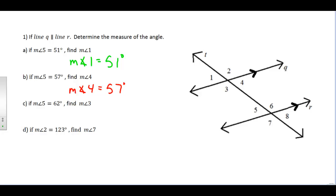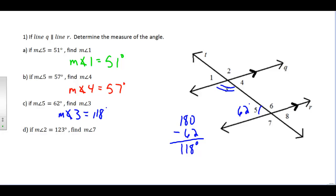For part C, if angle 5 is 62 degrees, find angle 3. Angles 3 and 5 are consecutive interior angles, so they must be supplementary. Taking 180 minus 62 gives 118 degrees for angle 3. For the last part, if angle 2 is 123 degrees, angle 7 would also be 123 degrees, because they are alternate exterior angles and must be congruent since lines Q and R are parallel.